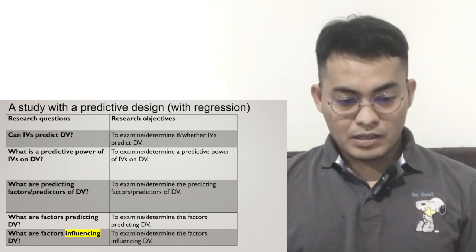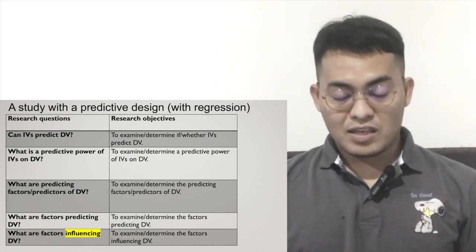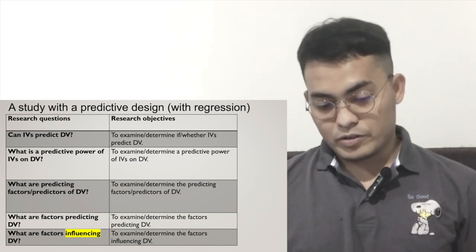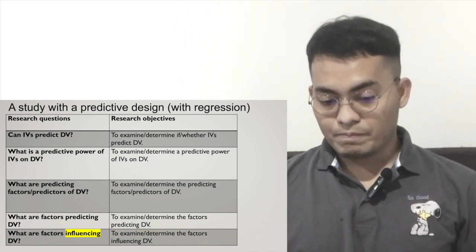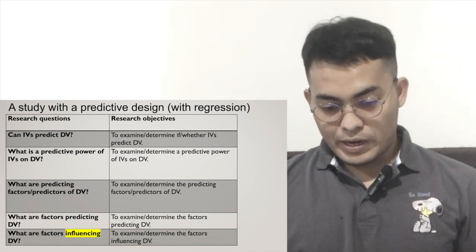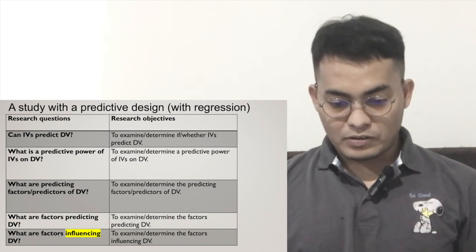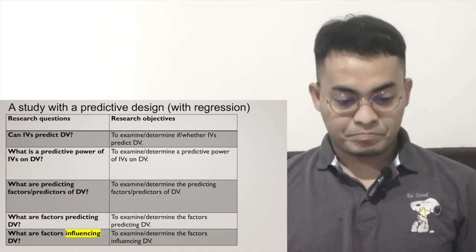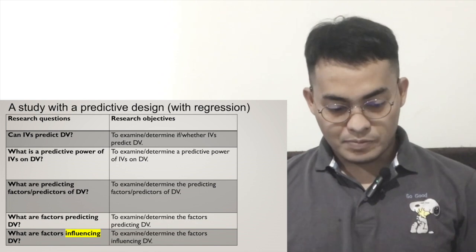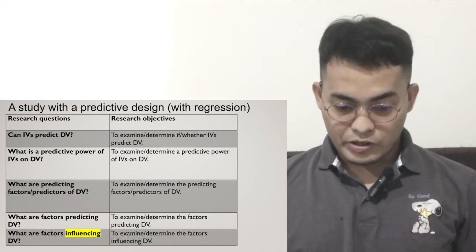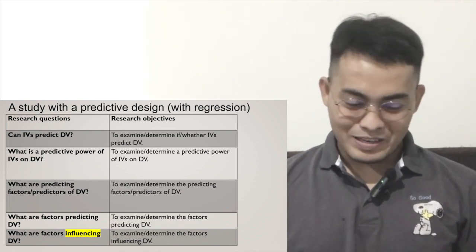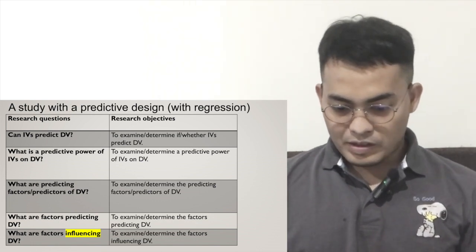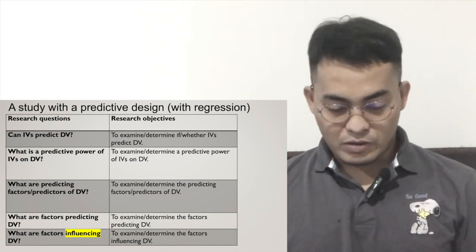The third research question: what are the predicting factors, or what are the predictors of dependent variable? The objective is: to examine or determine the predicting factors or the predictors of dependent variable. The fourth one: what are factors predicting dependent variable? It's similar — just a matter of how we paraphrase it. The objective is: to examine or determine the factors predicting dependent variable.